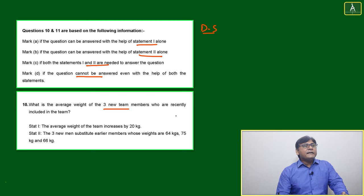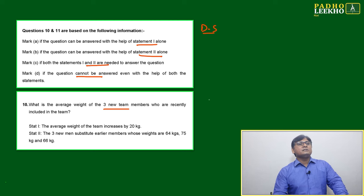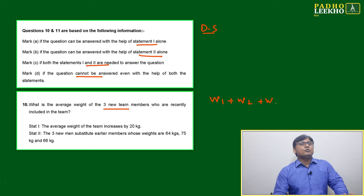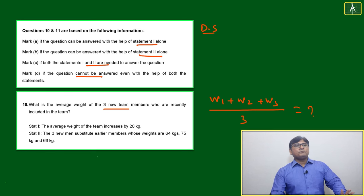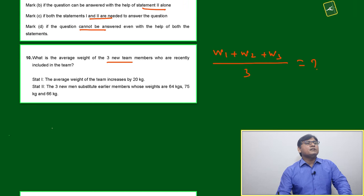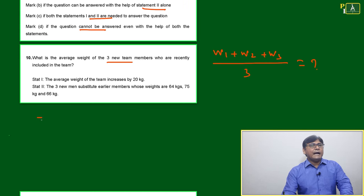Just we'll read question number 10. What is the average weight of the three new team members who are recently included in the team? Just suppose W1, W2, and W3. Three new members are there. We have to find the average of these three, means this we have to find.